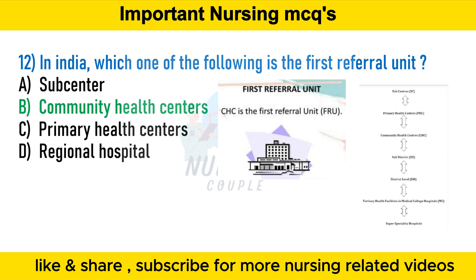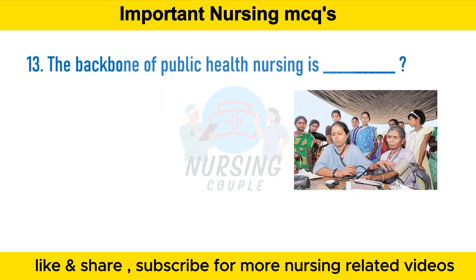Requirements of a first referral unit include emergency obstetric care including surgical interventions like cesarean sections, newborn care, blood storage facility, 24-hour delivery services, emergency care of sick children, full range of family planning services including laparoscopic services, safe abortion services, essential laboratory services, and referral services. There are three critical determinants: availability of surgical interventions, newborn care, and blood storage facility on a 24-hour basis.